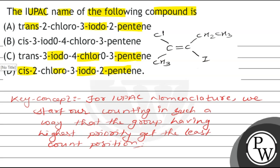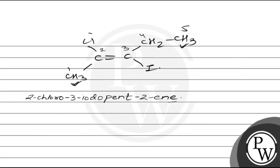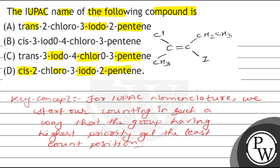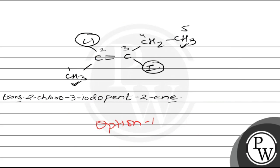Since the bulky groups, that is Cl and I, are on opposite sides, this compound is trans. So the correct name is trans-2-chloro-3-iodo-2-pentene, and the correct option is Option A. Hope you all understand it well, thank you.